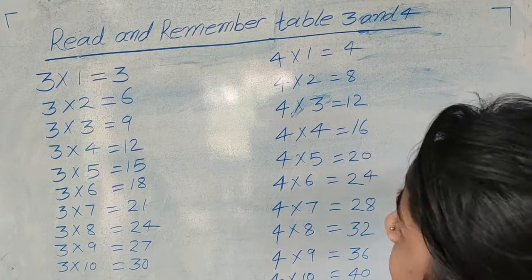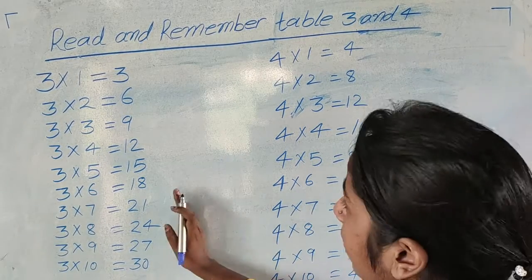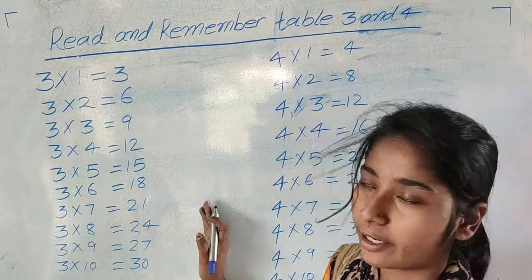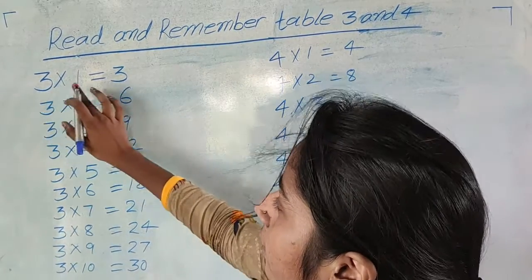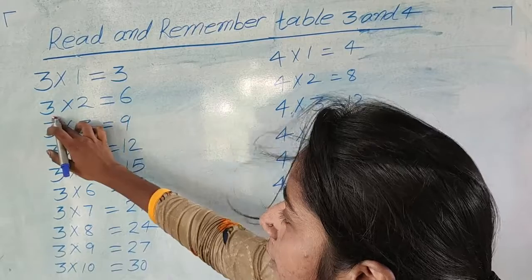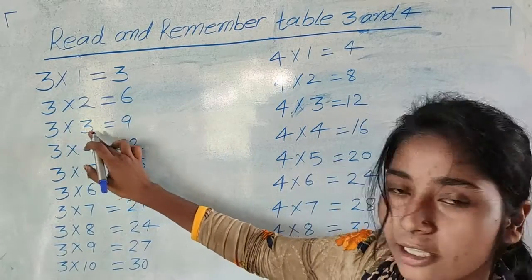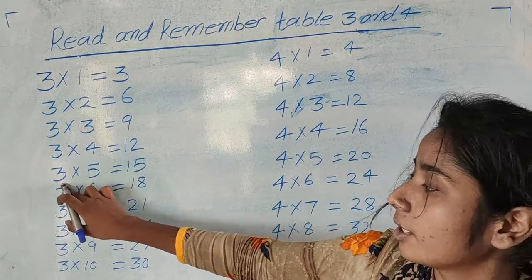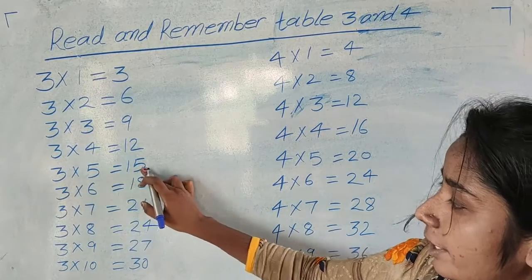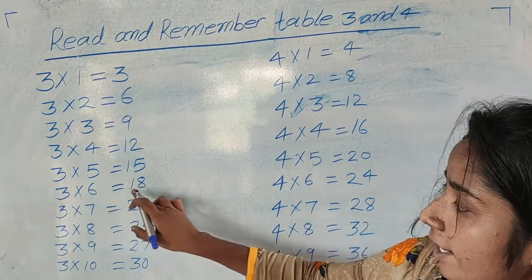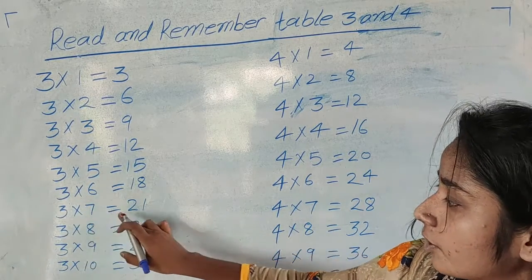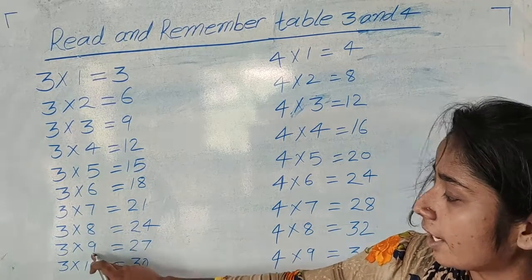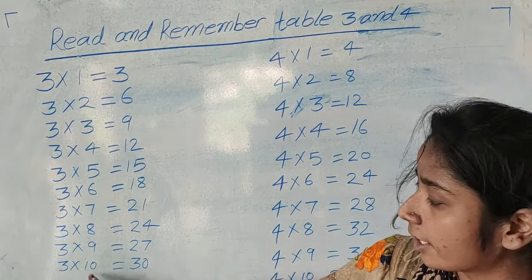यह हो गया हमारा 4 का टेबल और यह हो गया हमारा 3 का टेबल। 3 and 4 का टेबल। इसे हम लोग रिपीट करेंगे। 3 × 1 = 3, 3 × 2 = 6, 3 × 3 = 9, 3 × 4 = 12, 3 × 5 = 15, 3 × 6 = 18, 3 × 7 = 21, 3 × 8 = 24, 3 × 9 = 27, 3 × 10 = 30.